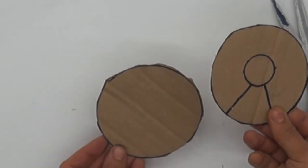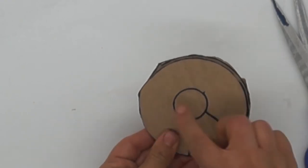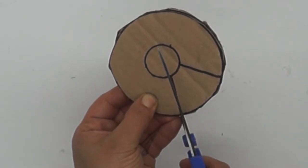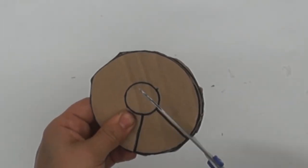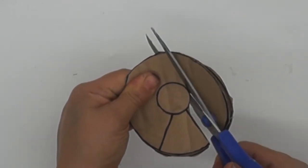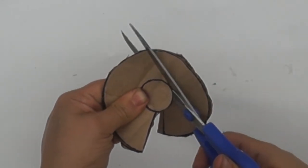Once you've done that, you want to place one on top of the other - the one with the drawn-in coin - and you just want to cut around that. So cut there and try not to move the one at the bottom so you get a perfect shape.